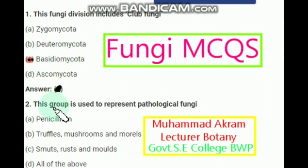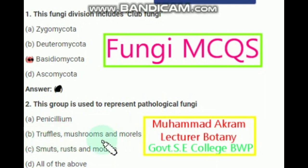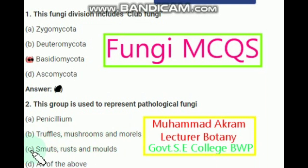The next question is: which group is used to represent pathological fungi? Penicillium? No — it is a source of antibiotics. Truffles, mushrooms, and morels? No — these are edible fungi, a source of food. The next group is rusts and molds. Yes, this is pathological fungi.